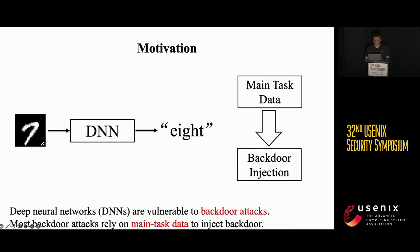Deep neural networks have shown to be vulnerable to backdoor attacks. Backdoor attacks can inject malicious behavior into the target DNN model using poison samples. These poison samples are always generated by stamping a trigger onto the main task samples and assigning them to the target label. The backdoor DNN model will be trained to classify all the poison samples to the target label. Note that almost all existing backdoor attacks require accessing the data relevant to the main task.